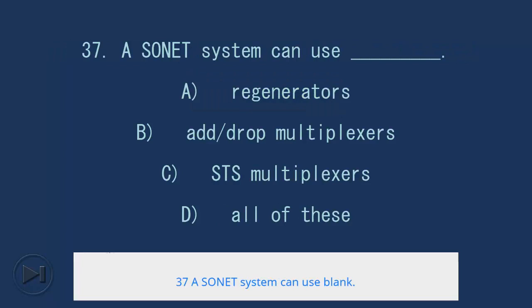37. A SONET system can use blank. A. Regenerators, B. Add-drop multiplexers, C. STS multiplexers, D. All of these. Answer: D. All of these.